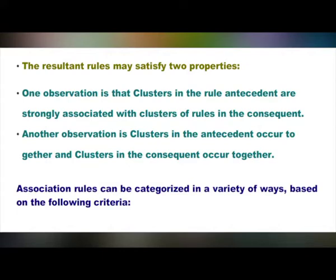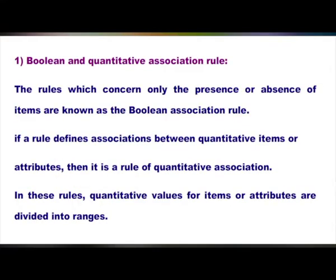Association rules can be categorized in a variety of ways based on the following criteria. The first criteria is Boolean and quantitative association rules. Rules which concern only the presence or absence of items are known as Boolean association rules — either yes or no. If a rule defines association between quantitative items or attributes, then it is a quantitative association rule, where quantitative values for items or attributes are divided into various ranges.